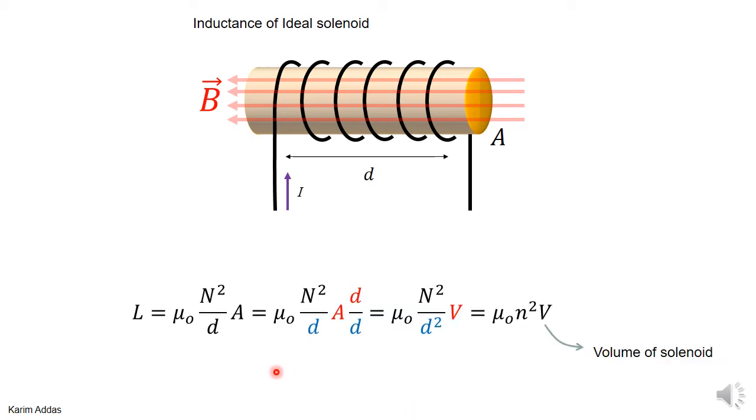If you want to go a bit further to change the way the formula is written, you can multiply up and down by d, and you can take the cross-sectional area times the total length and write that as the volume of the solenoid.